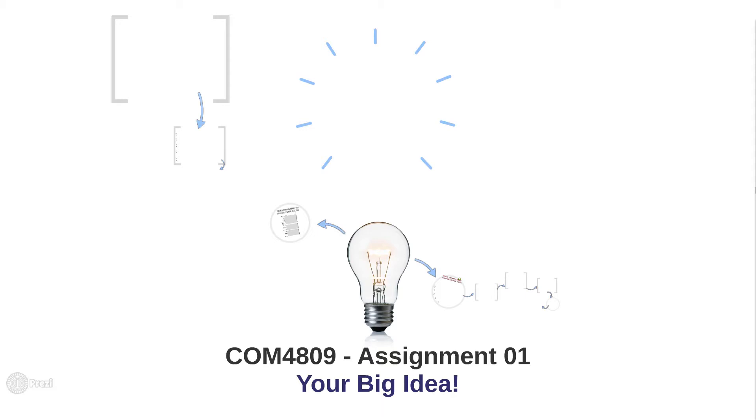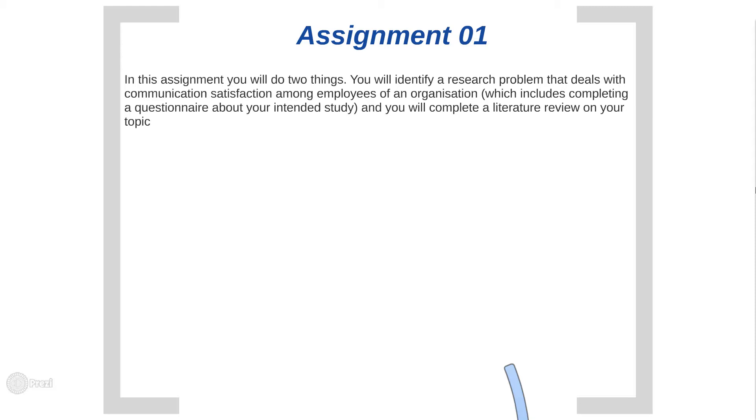Once you have told us what you want to do with your topic, you will be assigned a supervisor. Let's have a look at what assignment one entails. You've had a read through Tutorial Letter 101, so you have a general idea. Assignment one tells you that three things will need to be done for the May deadline.